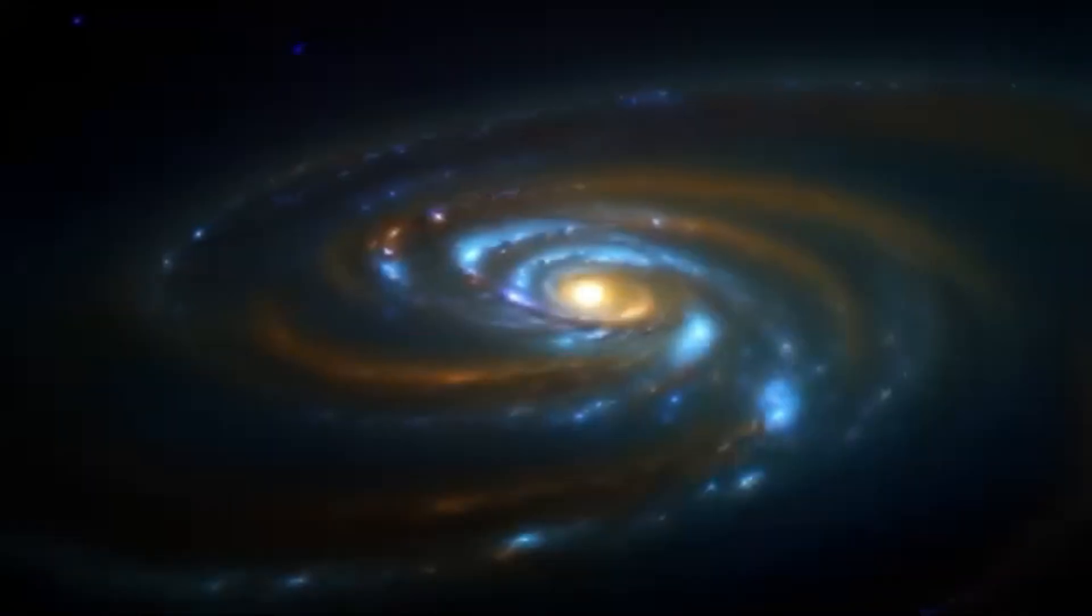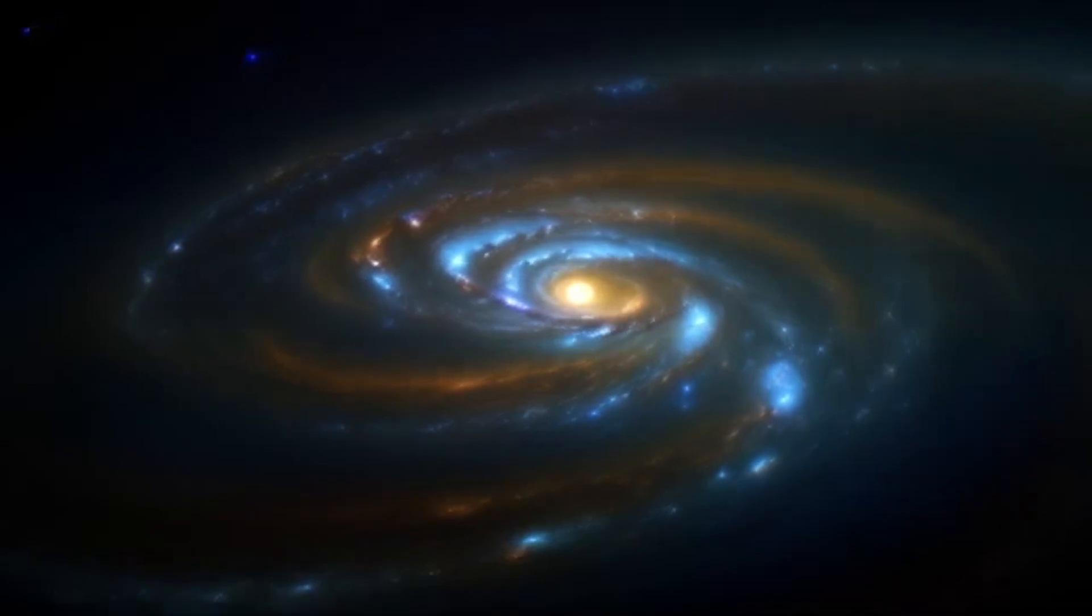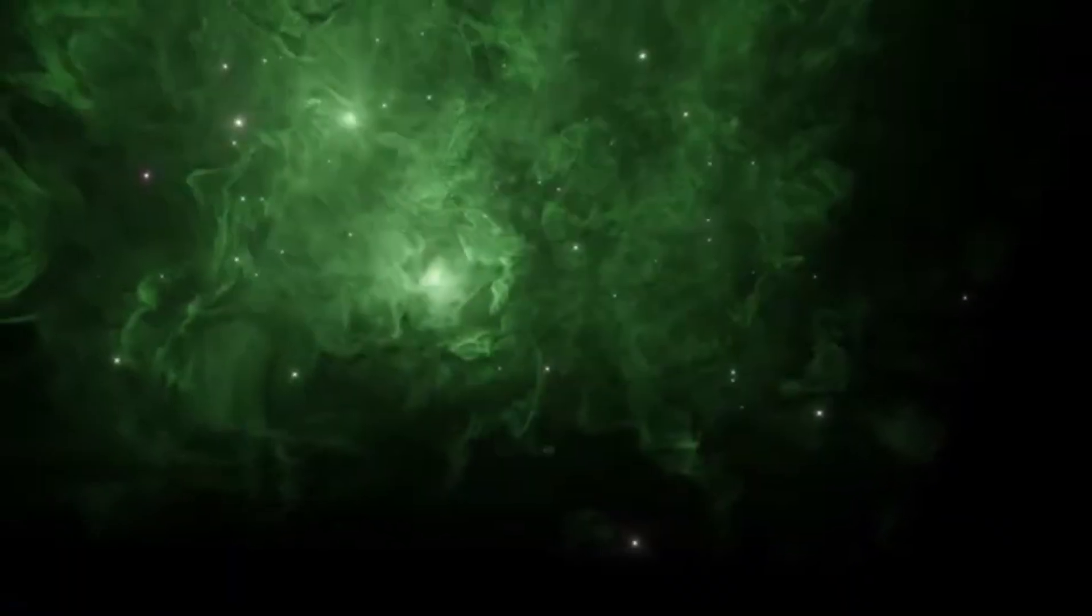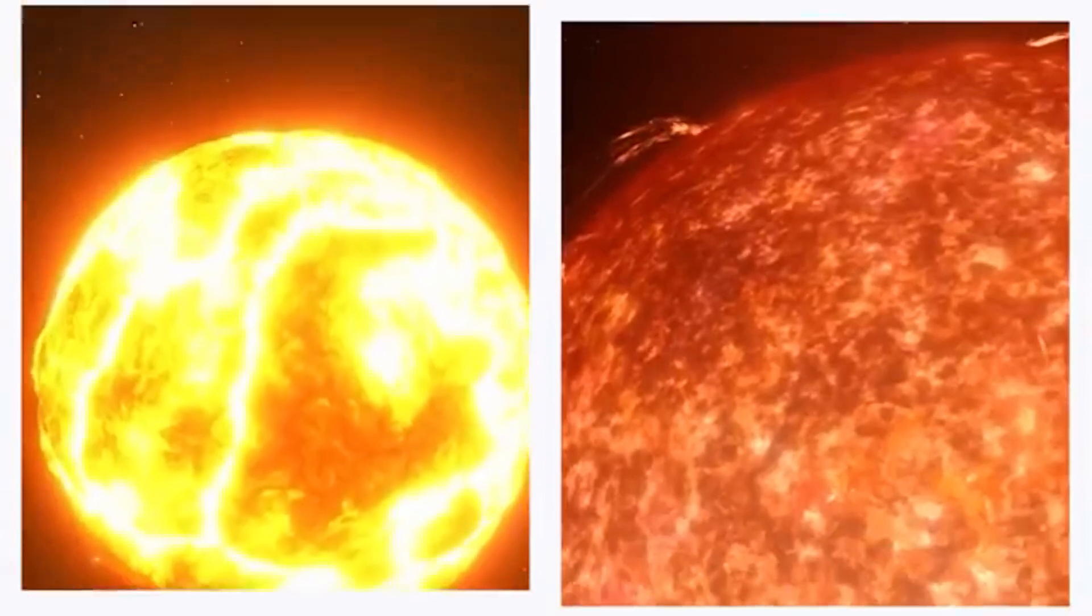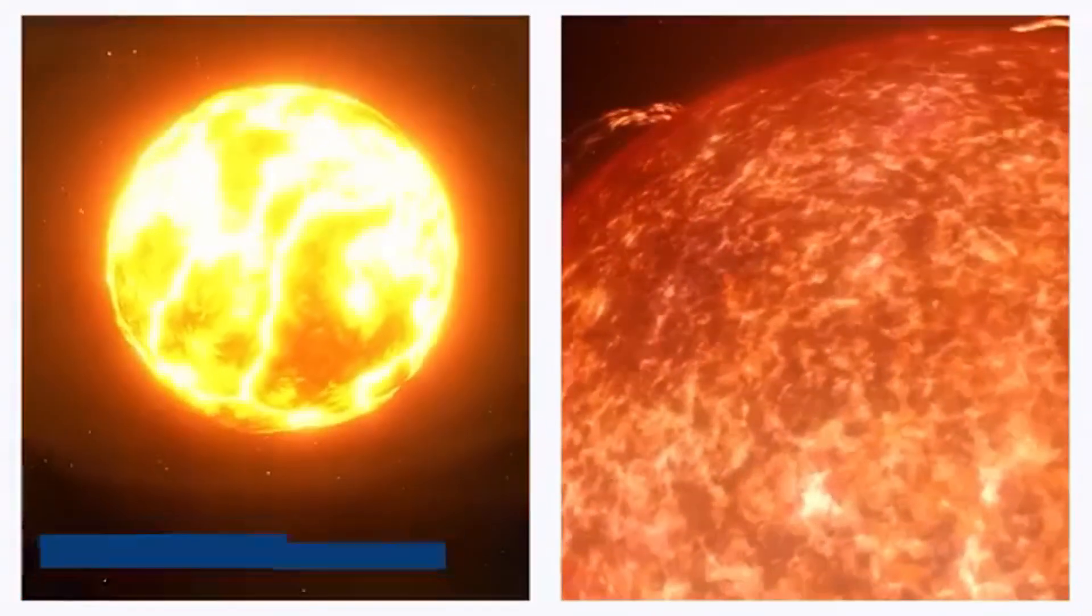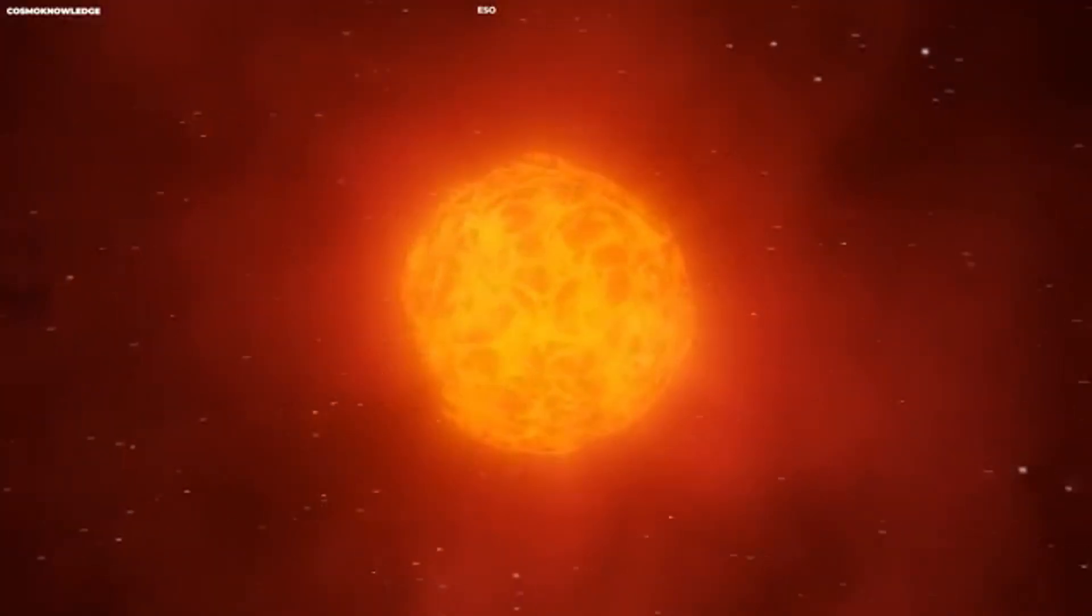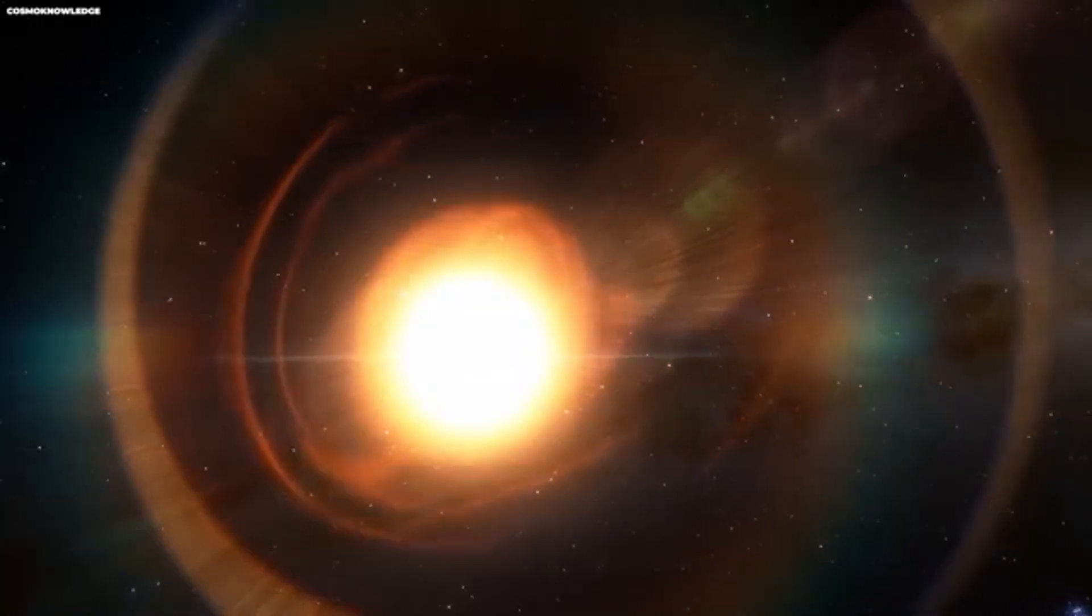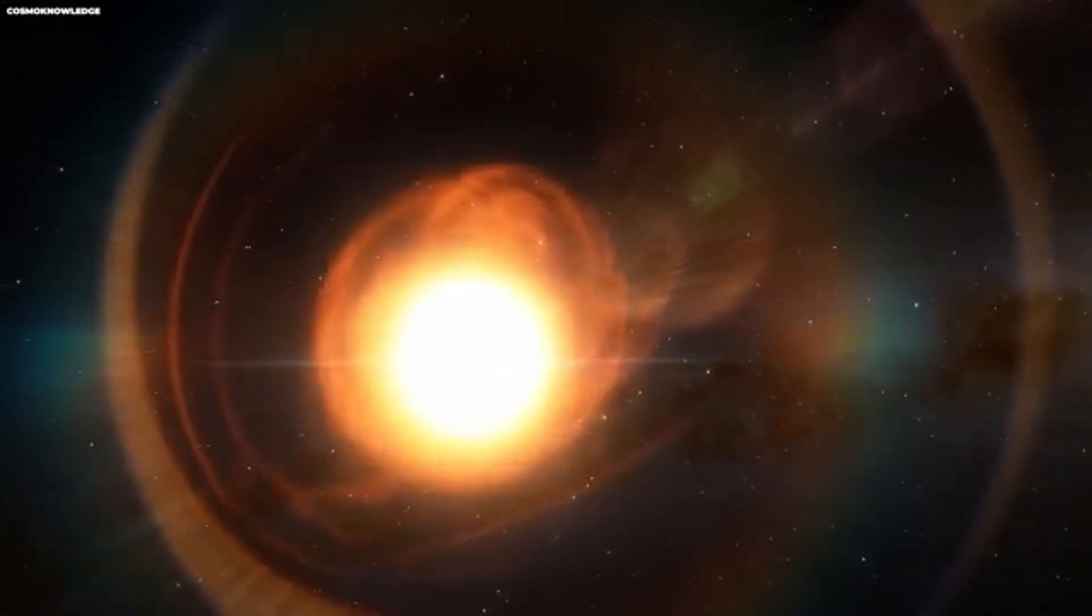Dupree and her team estimated that about twice the normal amount of material from Betelgeuse's southern hemisphere was lost over the three months of the outburst. This mass loss was significant, especially considering that Betelgeuse, like all stars, continuously loses mass, albeit at a rate far greater than that of our sun.